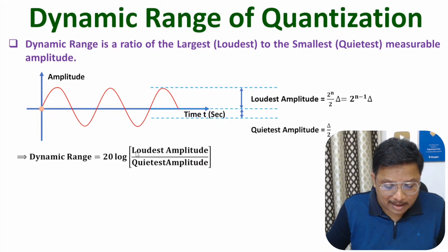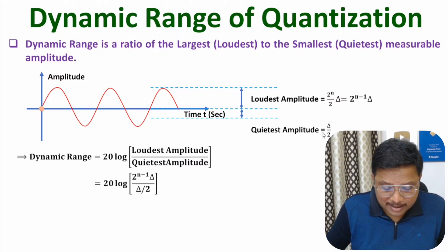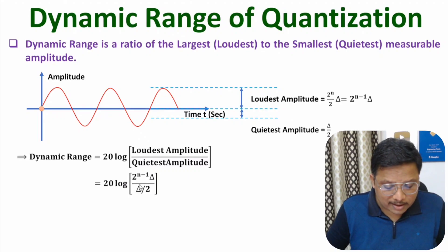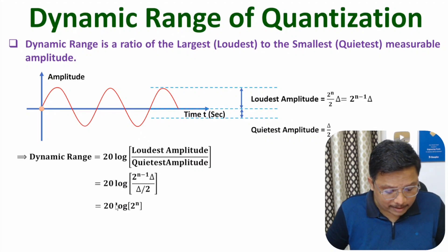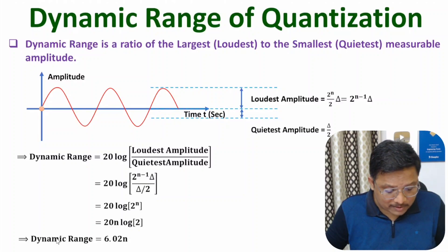Now substituting loudest amplitude as 2^(n-1) × δ and quietest amplitude as δ/2: the δ cancels, and the 2 in the denominator goes to the numerator, giving us 2^(n-1) × 2 = 2^n. Taking the log, n comes to the front, so we have 20·n·log(2). Since 20·log(2) = 6.02, the dynamic range equals 6.02 × n.